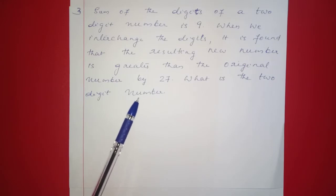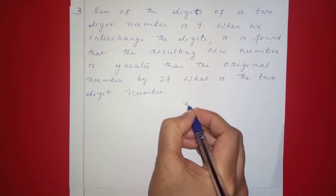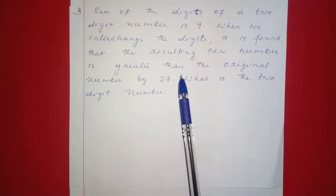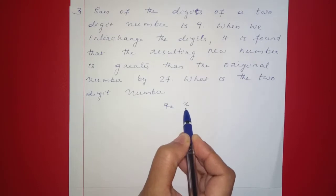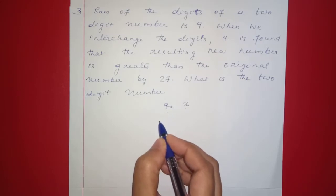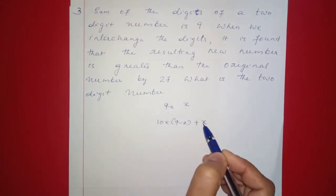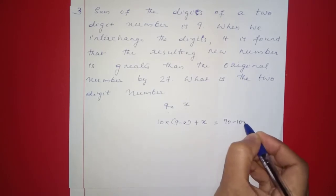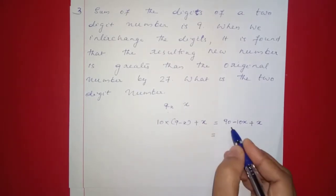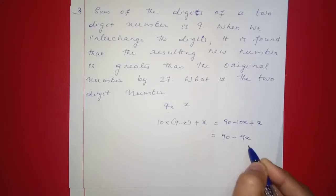We represent the two-digit number as follows: let the unit digit be x, so the tens digit is 9 minus x. The original number equals 10 into (9 minus x) plus x, which simplifies to 90 minus 10x plus x, giving us 90 minus 9x.